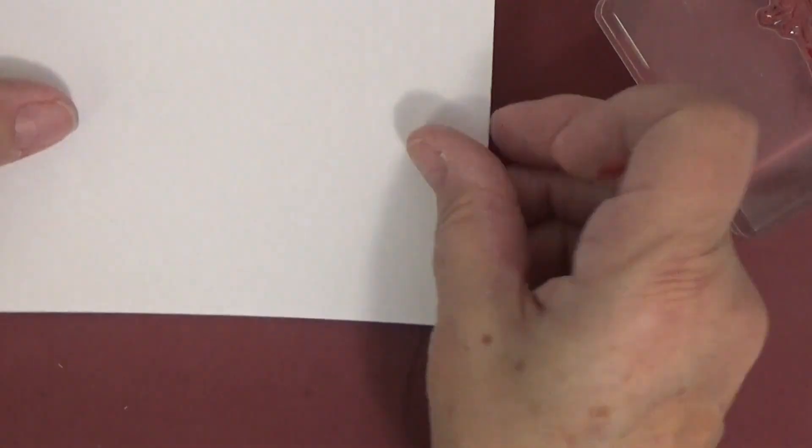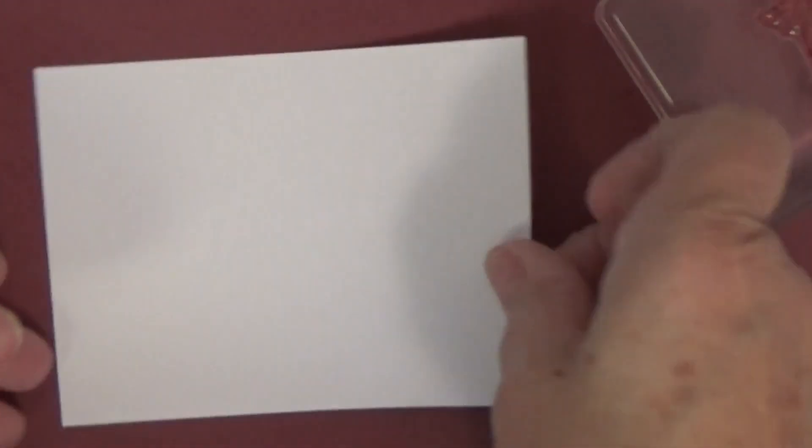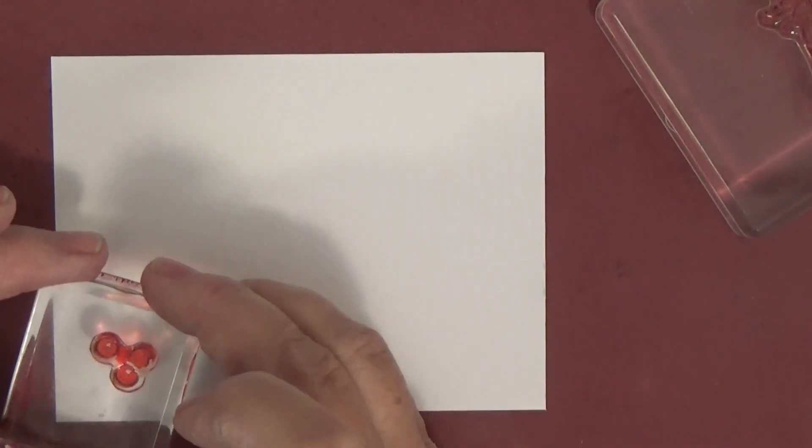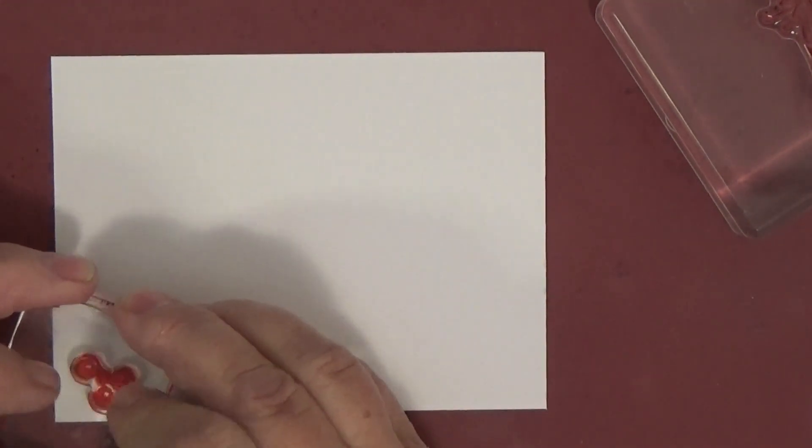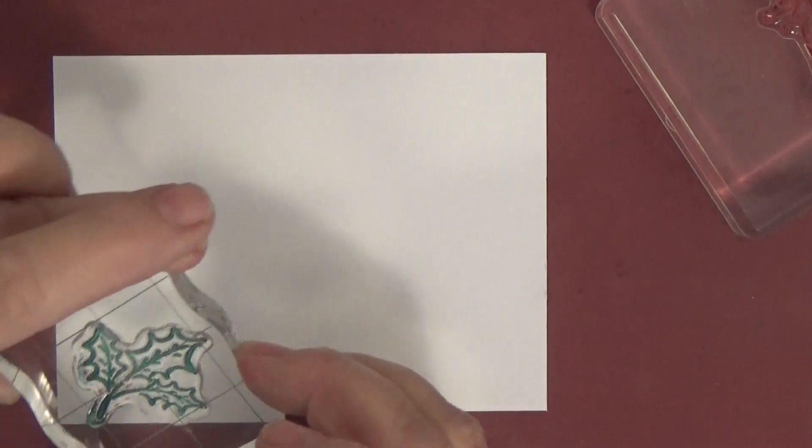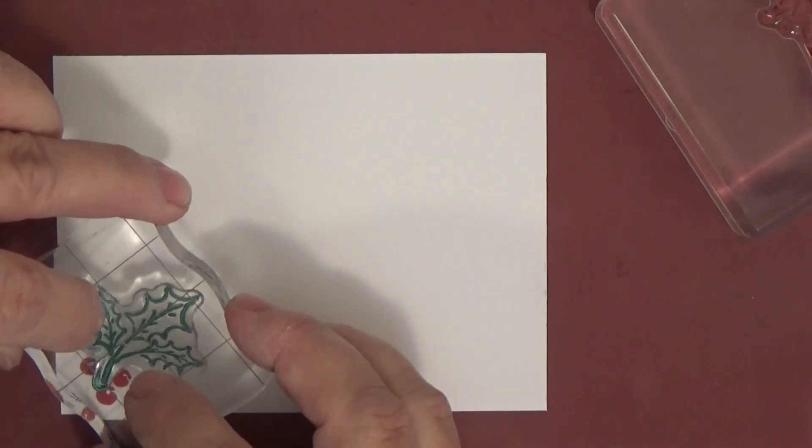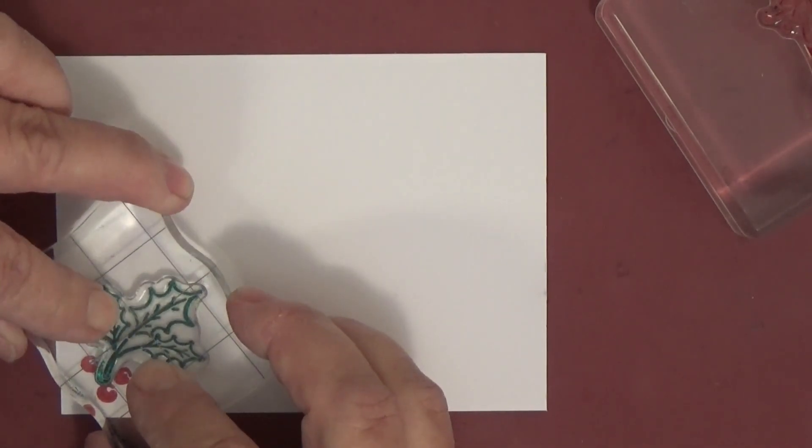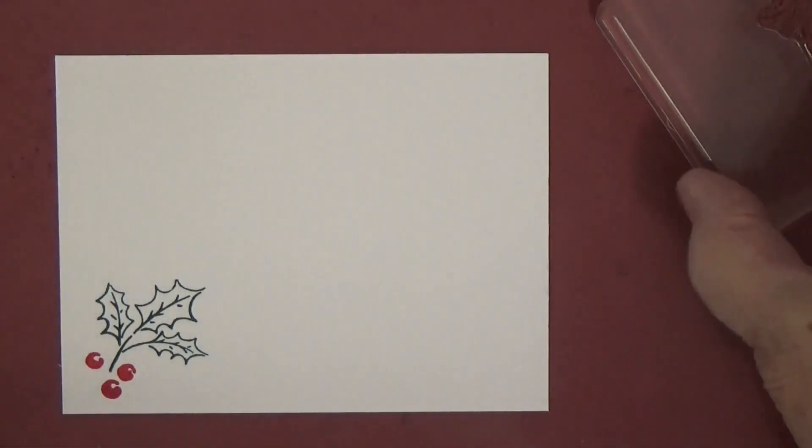We're going to first put some little holly berries in the corner like so. Then we're going to take a holly leaf in the green and stick that right in there. So there's a little holly sprig.